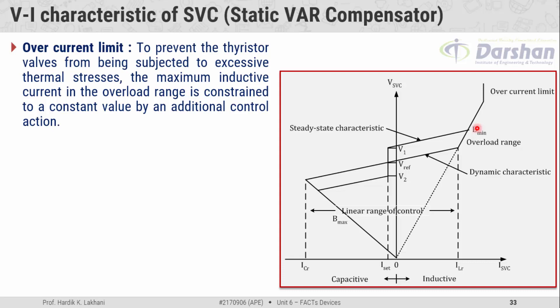The overcurrent limit: to prevent the thyristor valves from being subjected to excessive thermal stress, the maximum inductive current in the overload range is limited to a constant value by additional control action. In order to protect the components of the SVC compensator, the maximum inductive current in the overload range is limited to a specific constant value, and that portion is known as the overcurrent limit.